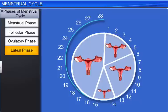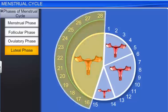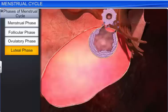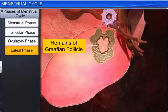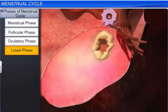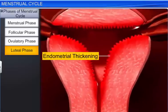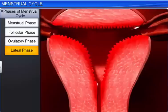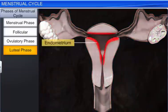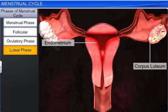The ovulatory phase is succeeded by the Luteal or Secretory phase, the last phase of the menstrual cycle, which occurs between days 16 and 28. This phase sees the transformation of the remaining Graafian follicle into a yellow mass called the corpus luteum. The endometrium too thickens, and its blood vessels become coiled and enlarged. Interestingly, the endometrium and corpus luteum play a vital role during the early stages of conception.